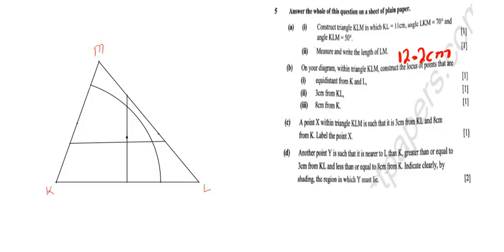We are now done with part B — that's 3 marks, making 5 marks together with the first 2 from part A. Moving to question C: a point X within triangle KLM is such that it is 3 centimeters from KL and 8 centimeters from K. The 3 cm from KL is the parallel line we constructed, and 8 cm from K is the arc. Point X is their intersection, which is right here.